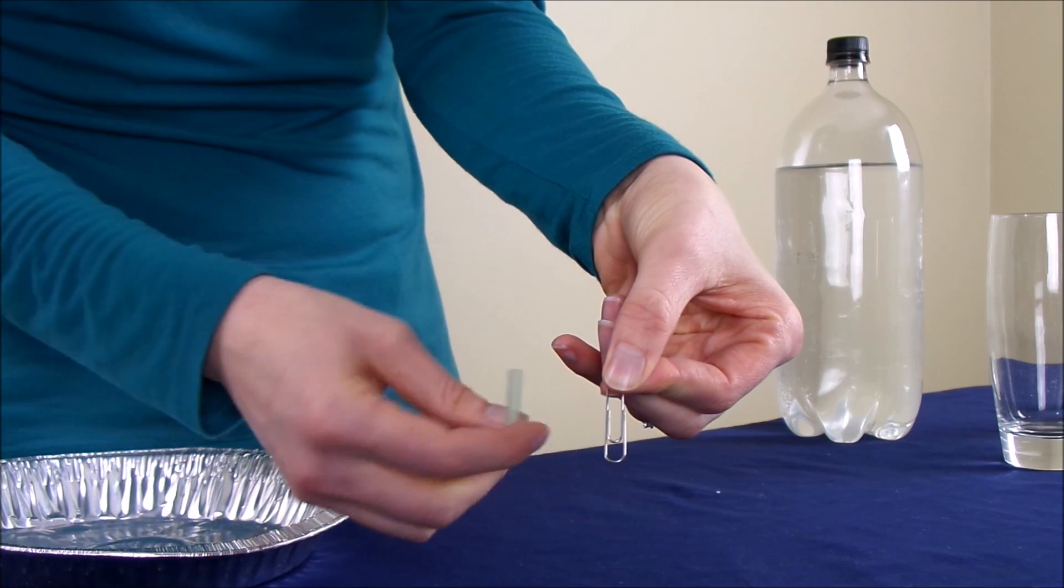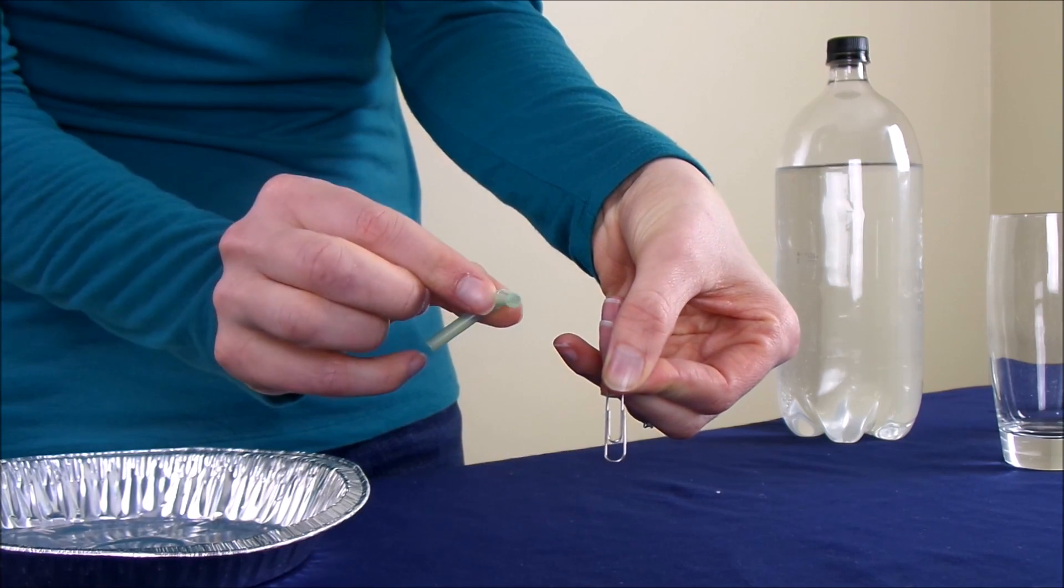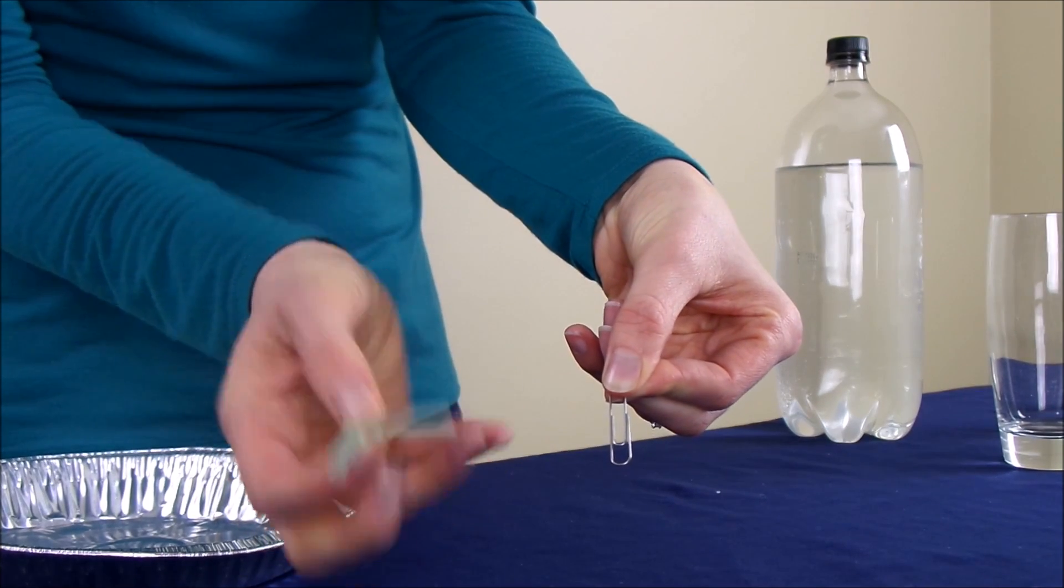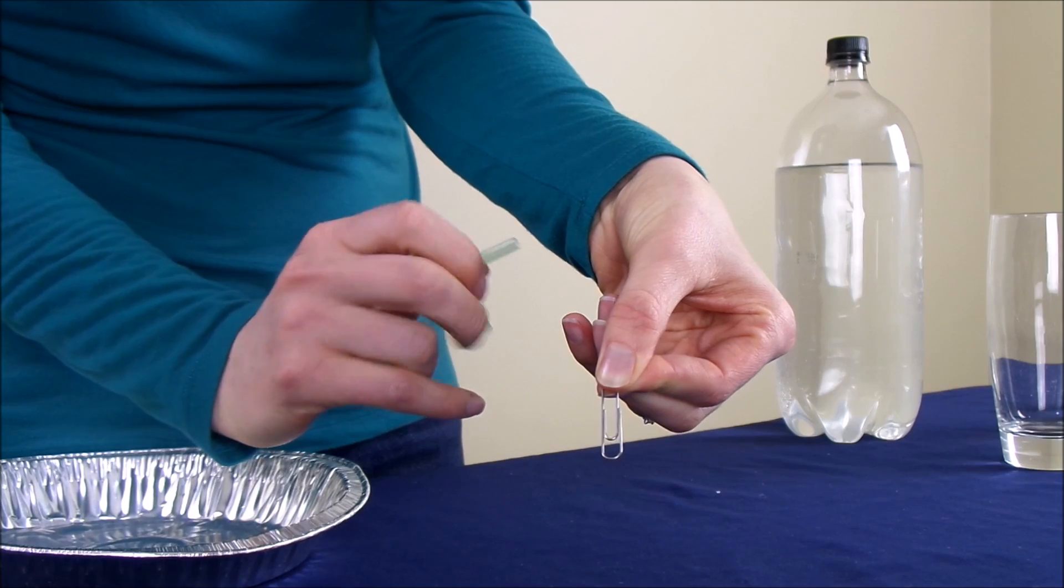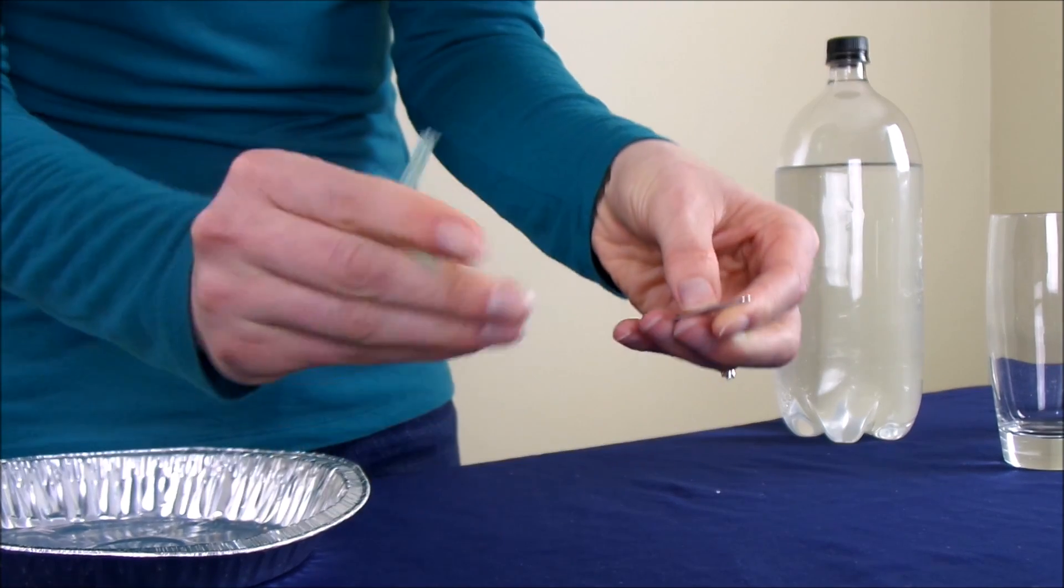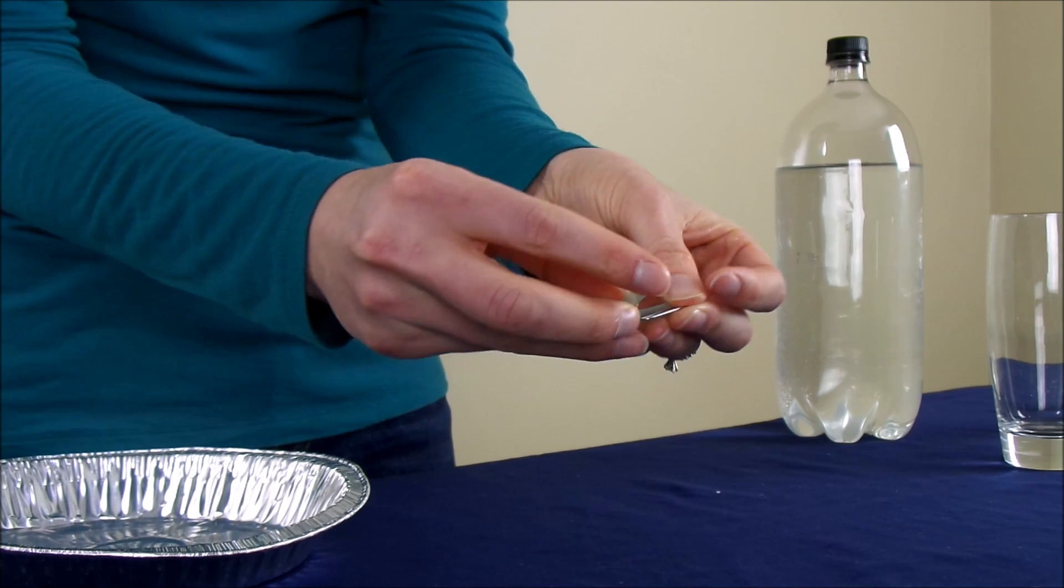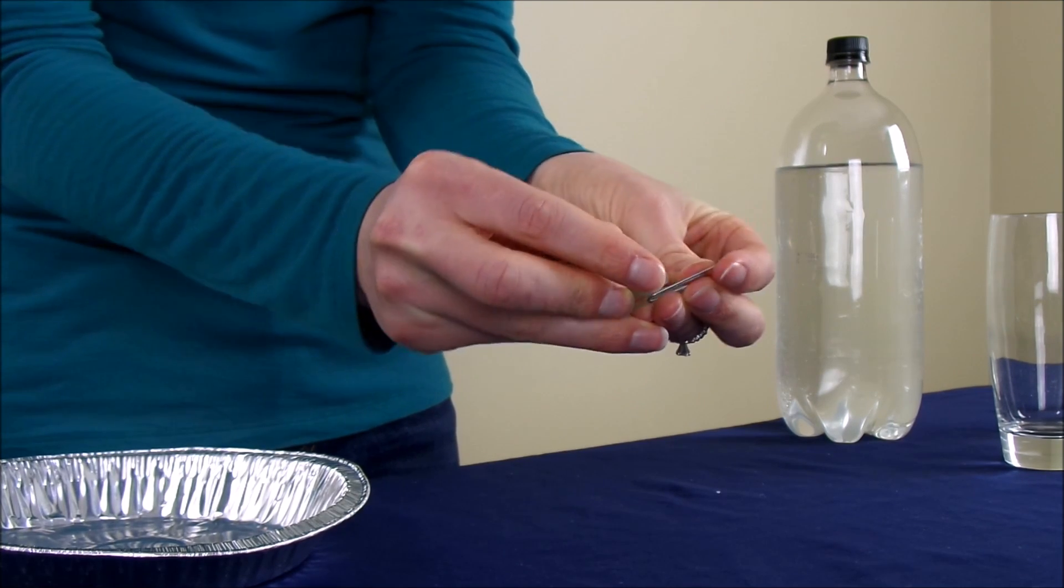What you're going to do is take your straw. One end of the straw is going to slide into one end of the paper clip, and the other end of the straw is going to slide into the other end. It's a little tricky at first, but once you get it started, you can finish it up pretty easily.